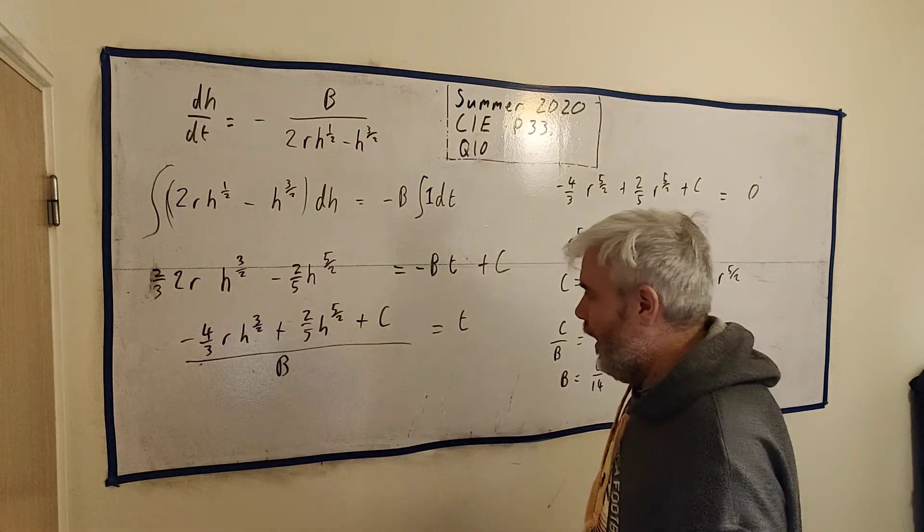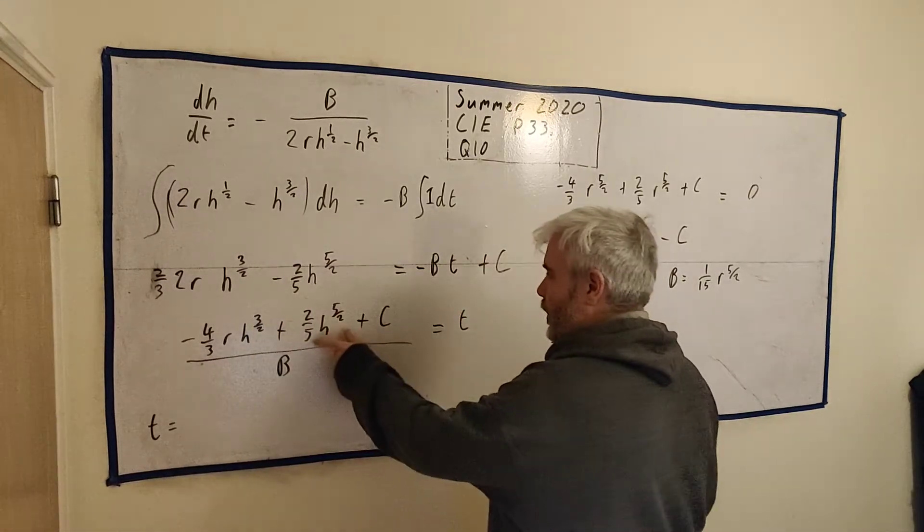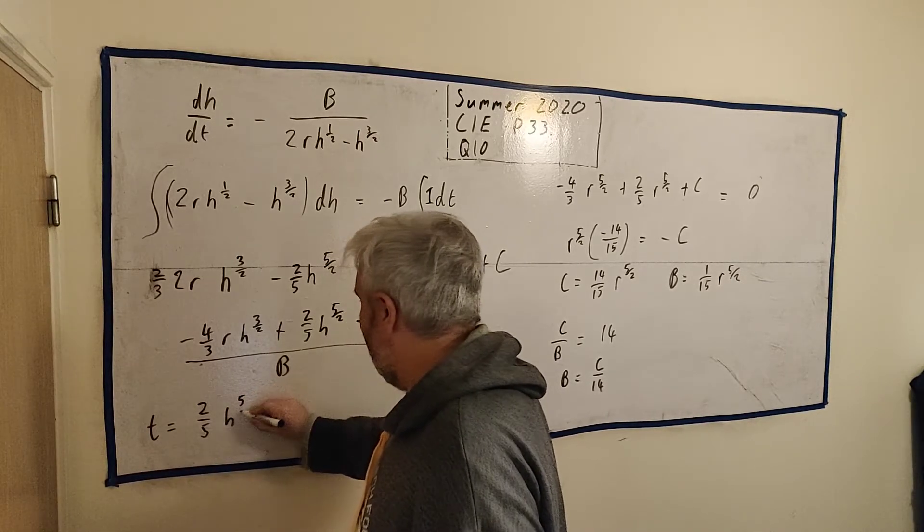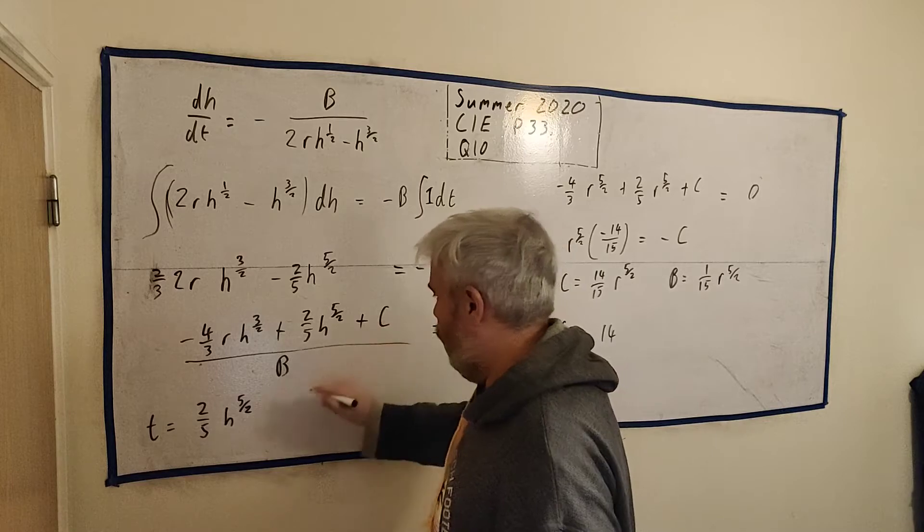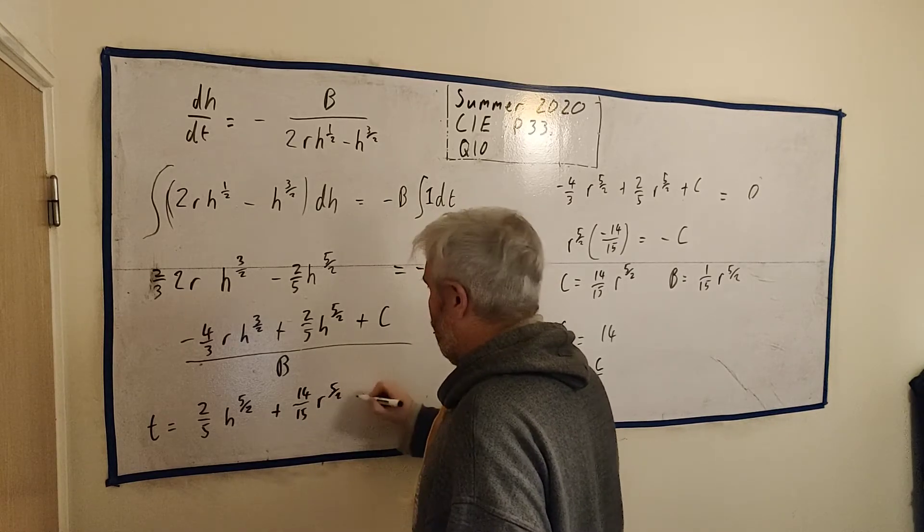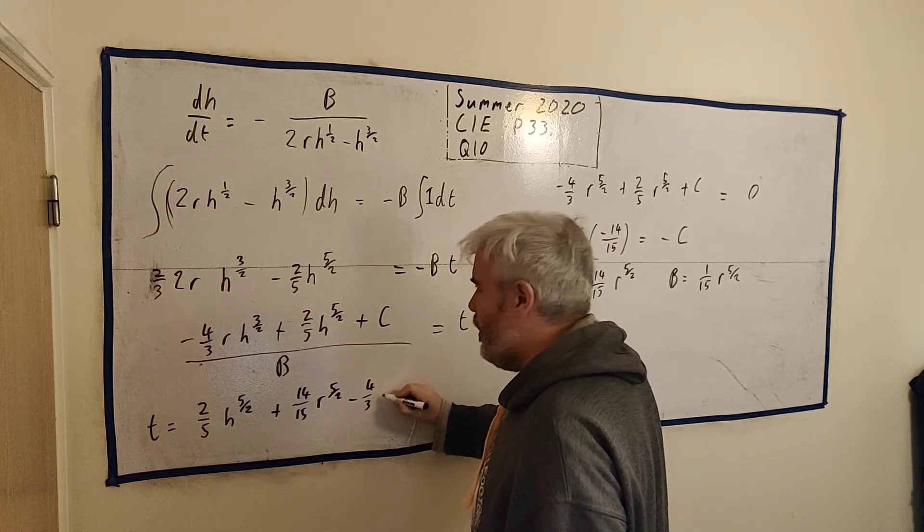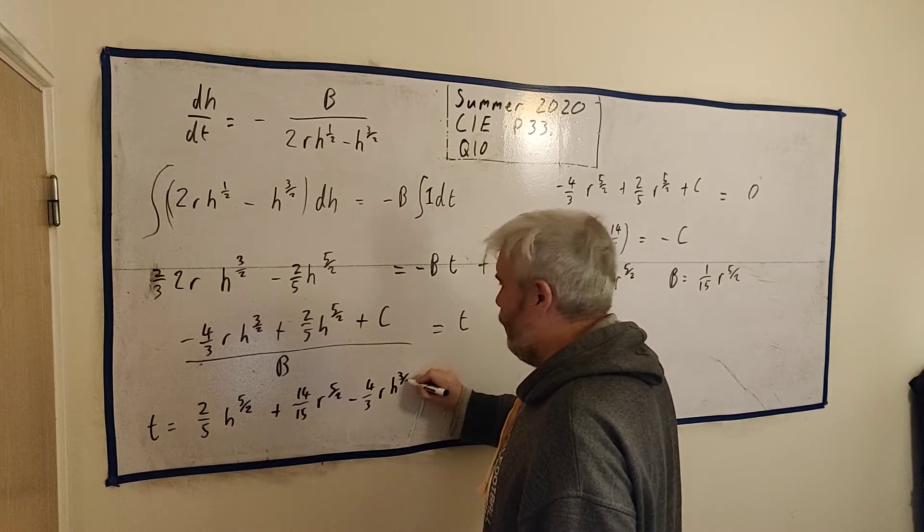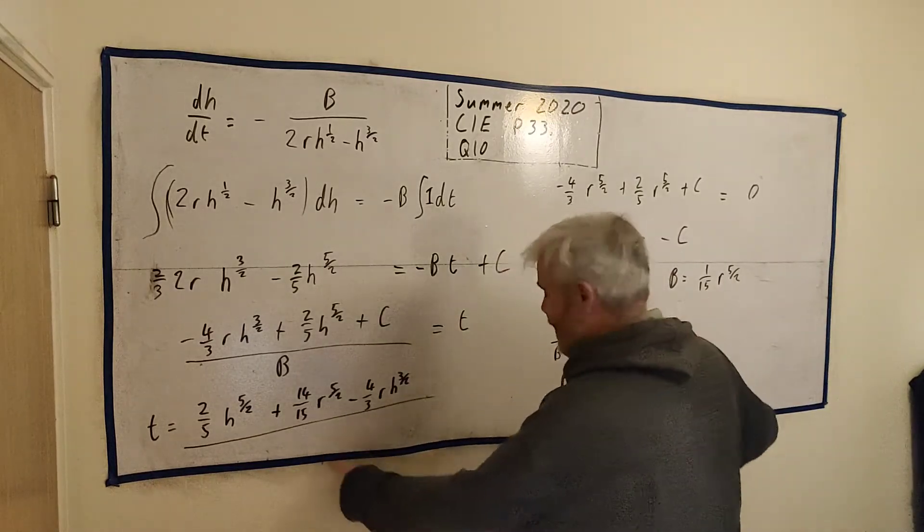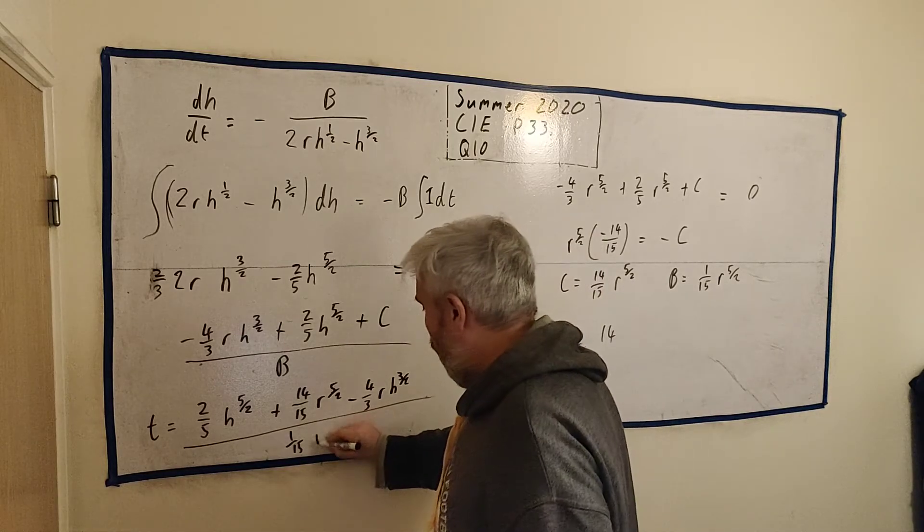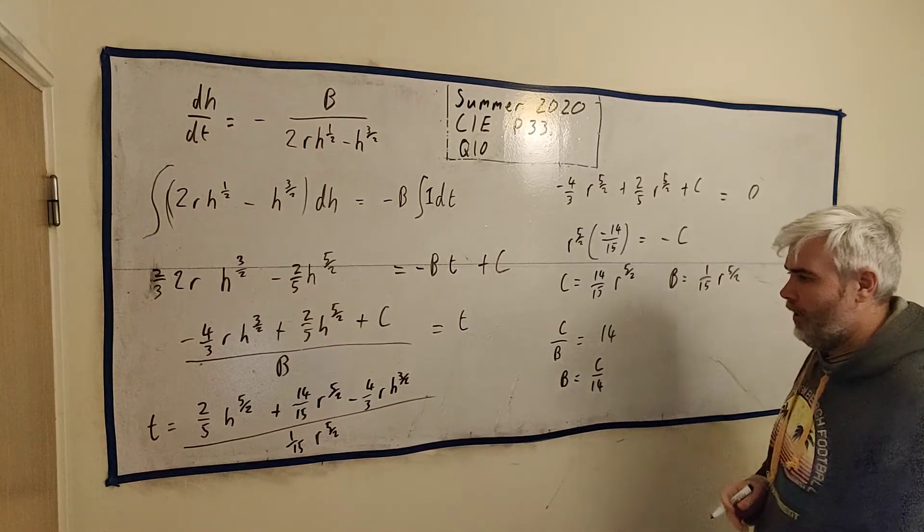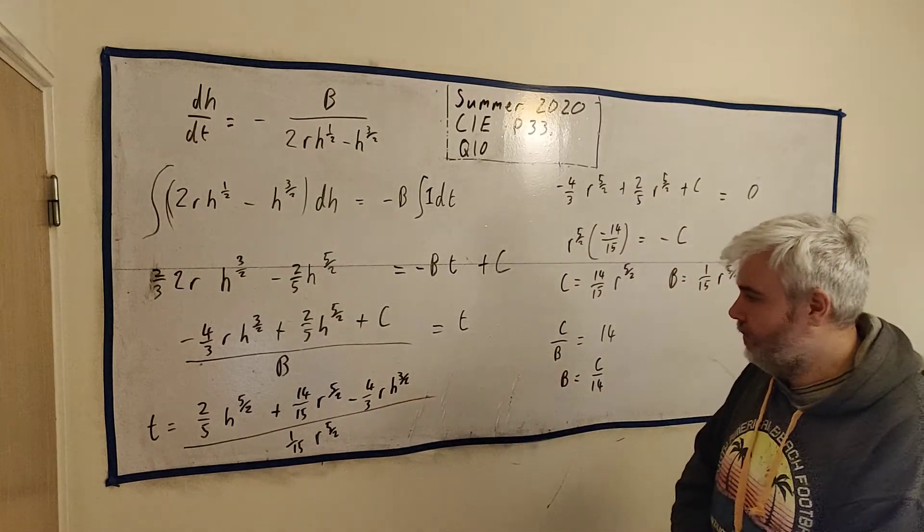So we know what b is then. So let's write this one last time. t is equal, let's write the positive number first, 2/5 h to the 5/2 plus, we'll put c in next, plus 14 over 15 r to the 5/2 minus 4/3 or times h to the 3/2, all divided by, this is the correct answer by the way, this is a mess I know, all divided by b which is 1 over 15 or to the 5/2. That will get you full marks. I'll maybe clean it up a little bit, but that's the correct answer. I'll confirm it's the correct answer. I don't think I've made any mistakes there.